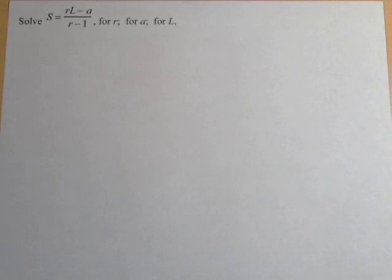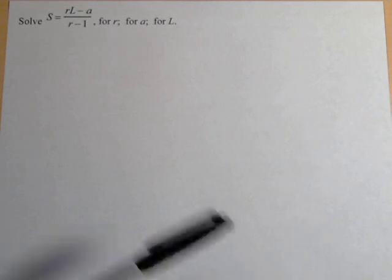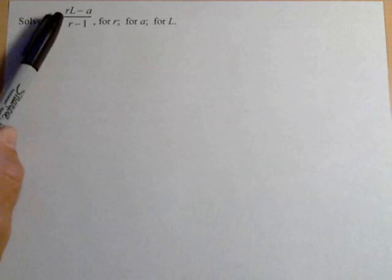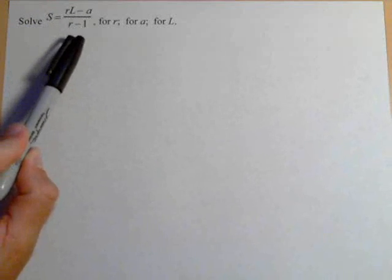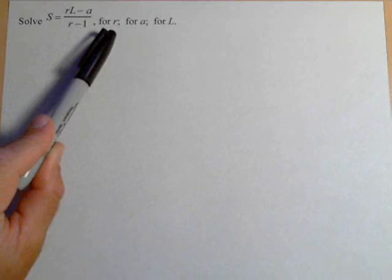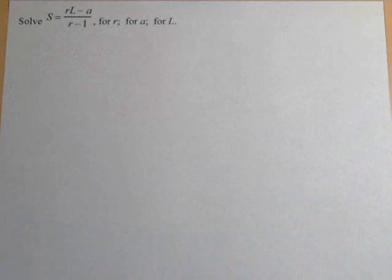In this video, we're gonna look at solving a literal equation, S equals RL minus A over R minus one, for three separate variables: one for R, one for A, and one for L. We'll do all these together, so let's do R first.